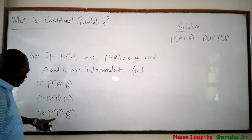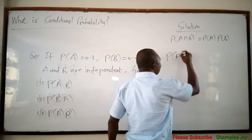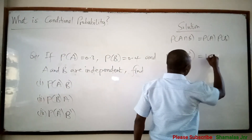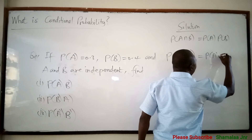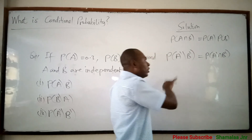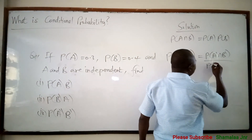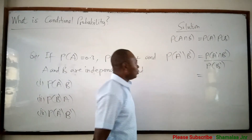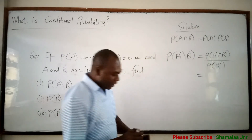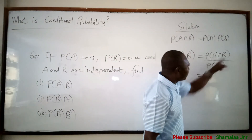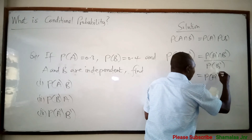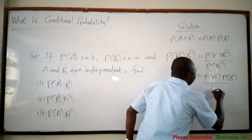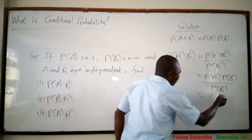You have been asked to find probability of A complement given B complement. This is equal to probability of A complement and B complement over probability of B complement. Because the events are independent, you can write this as P of A complement times P of B complement all over P of B complement. P of B complement cancels P of B complement.